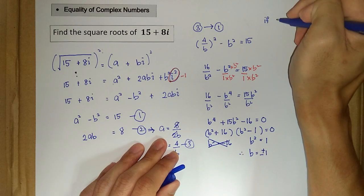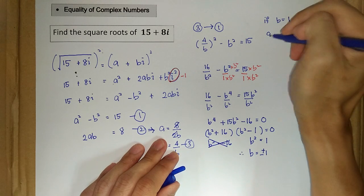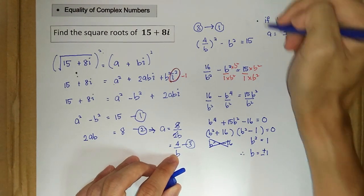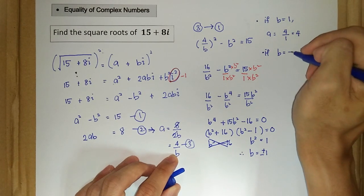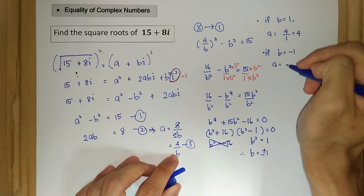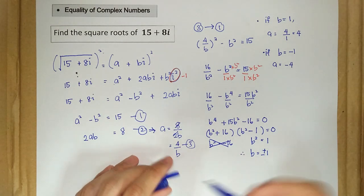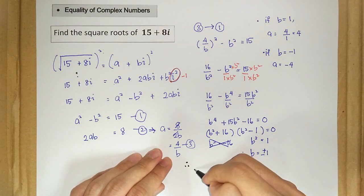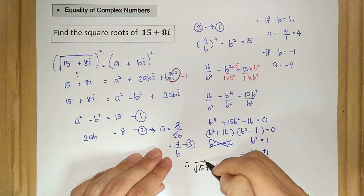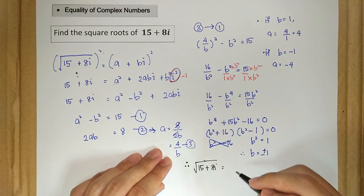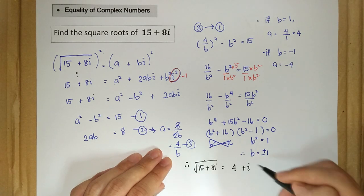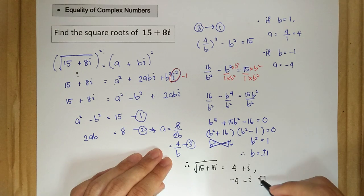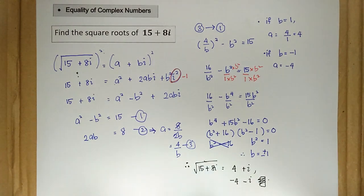If b is equal to positive 1, then a is just 4 over 1, which equals 4. And if b is equal to negative 1, then a is equal to negative 4. So to conclude, the square root of 15 plus 8i takes two values: the first one is 4 plus i, and the second one is negative 4 minus i. These are the answers for this question. Thank you for watching this video. Bye-bye.